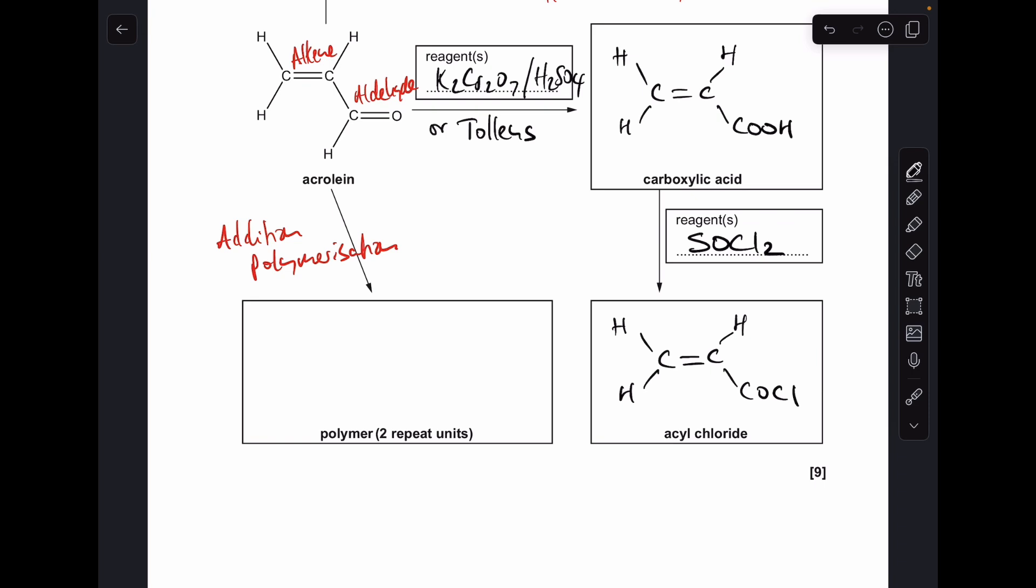So because we've got two repeat units, we're going to have four carbons in a line. We're going to put the end bonds on to show that this continues. They can be dotted lines, by the way, the end bonds. And then all we need to do is put the groups back on. So I'll just put empty bonds first. And then I'm just going to mirror what they've given us in the monomer. So it's H there and there, H there. And for the aldehyde group, I haven't got much room. So I'm just going to write CHO. And then just do that again. And that is it.